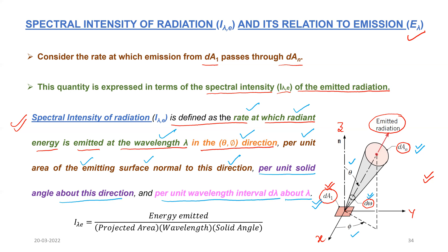See this equation: i_lambda_e is the spectral intensity of radiation. It is equal to the emitted energy per unit of the emitting surface normal to the direction — that is the projected area — per unit of the wavelength, and per unit of the solid angle. So this is how we get the definition of the spectral intensity of radiation.